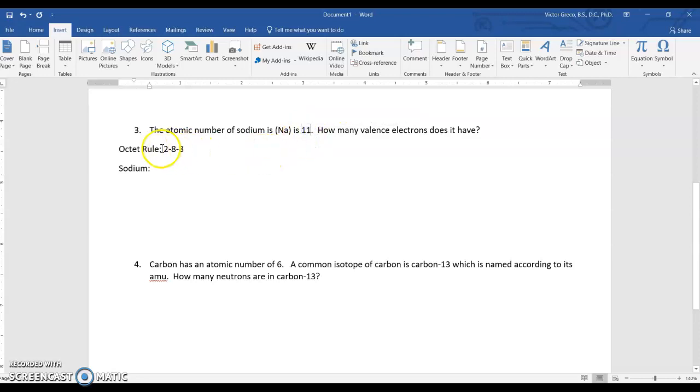So all you do is distribute the 11 electrons. How many go in the first shell? Well, a first shell can hold 2. So of the 11, we have 2. Now we have 9 left. How many in the second shell? 8. So 2 plus 8. We've used 10. We need to get to 11. So we need to use the third shell just for 1 electron.